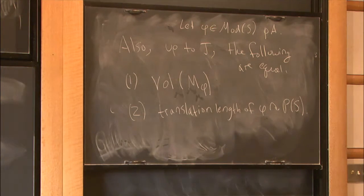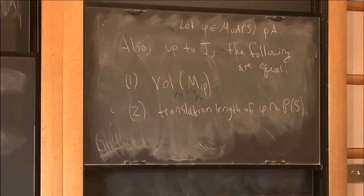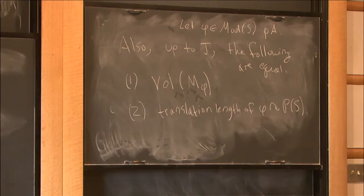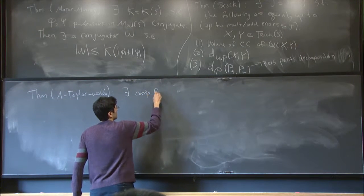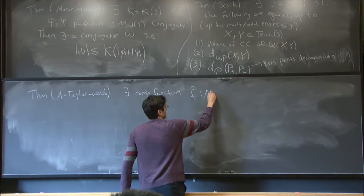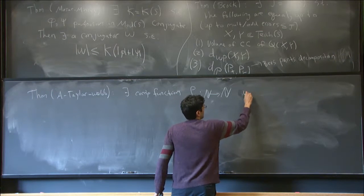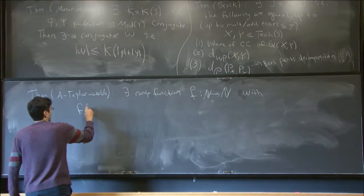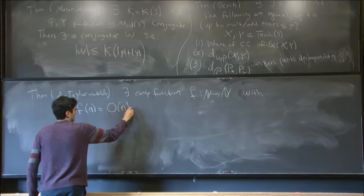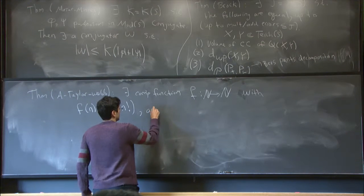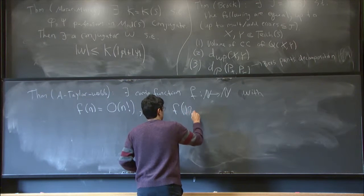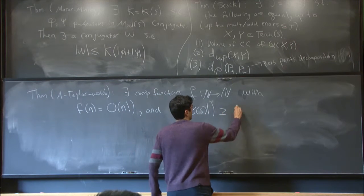Hopefully that's good motivation for the main theorem, which is joint work with Samuel Taylor and Richard Webb. The theorem is that there exists a computable function f — we can write down explicitly what it is — that grows at worst factorially. And f of the absolute value of the Euler characteristic of the surface is an upper bound on both J and K.